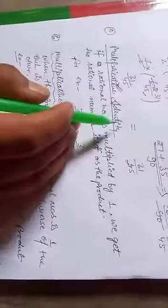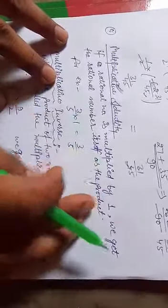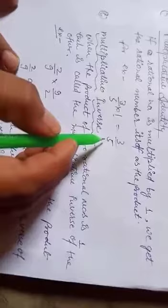Next is the multiplicative identity. If a rational number is multiplied by 1, we get the rational number itself as the product.